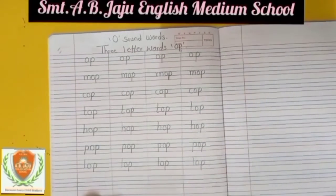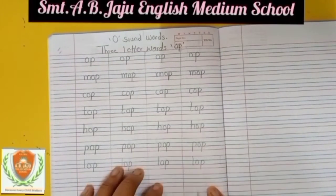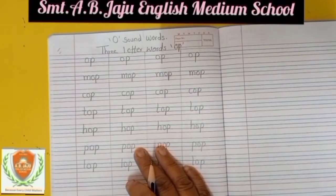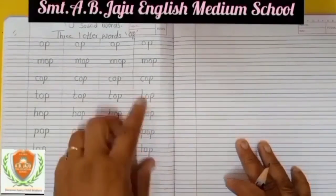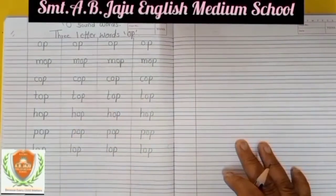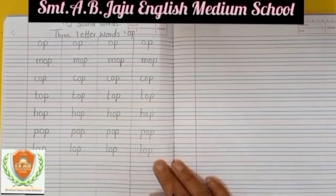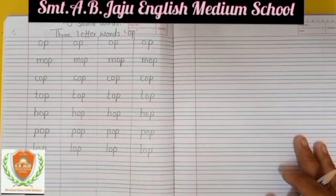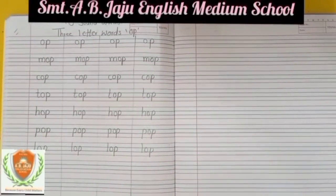Now students, you have to write down two pages in your notebook. Like this, write one page here and another page here — mop, cop, top, hop, pop, lop. These are O sound three letter words. You have to write two pages and learn the spellings.